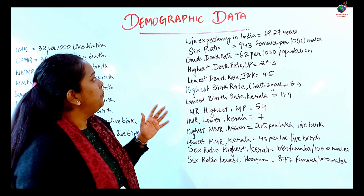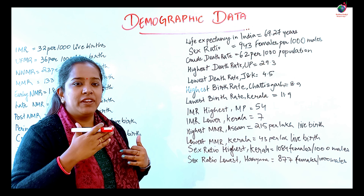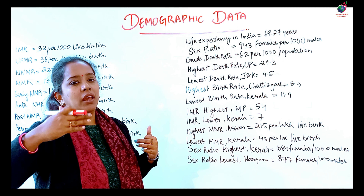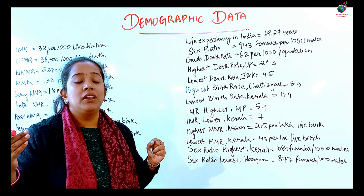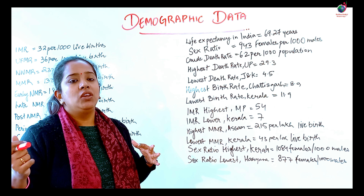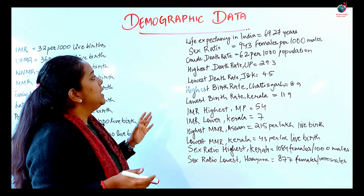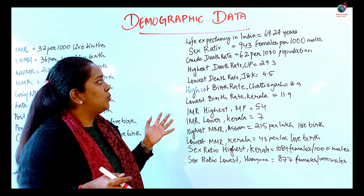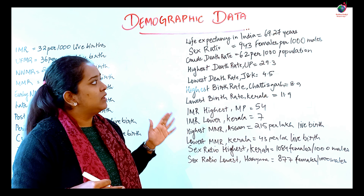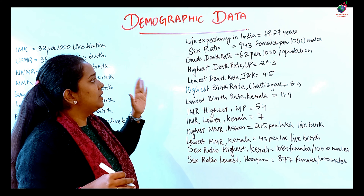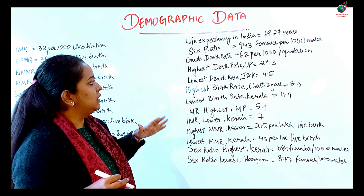Next, we'll talk about life expectancy. The average life expectancy is 69.27 years, or approximately 69 years. The normal sex ratio is 943 females per 1,000 males. Crude Death Rate is 6.2 per 1,000 population.